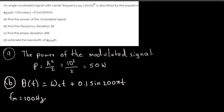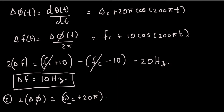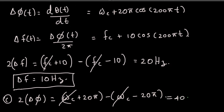For part (c), we find the phase deviation Δφ. Using a similar approach: the maximum instantaneous angular frequency deviation is ω_c + 25 and the minimum is ω_c − 25. The total angular swing is 2Δφ = (ω_c + 25) − (ω_c − 25) = 50, so Δφ = 25 radians.